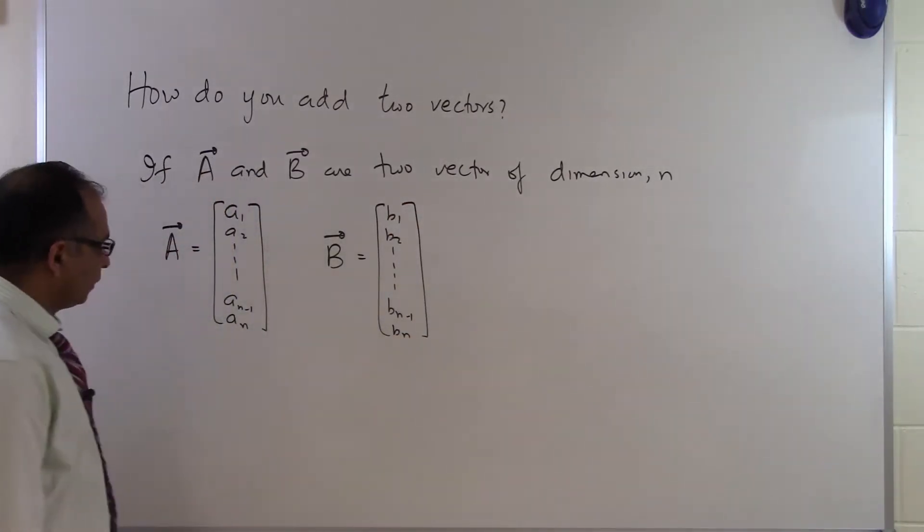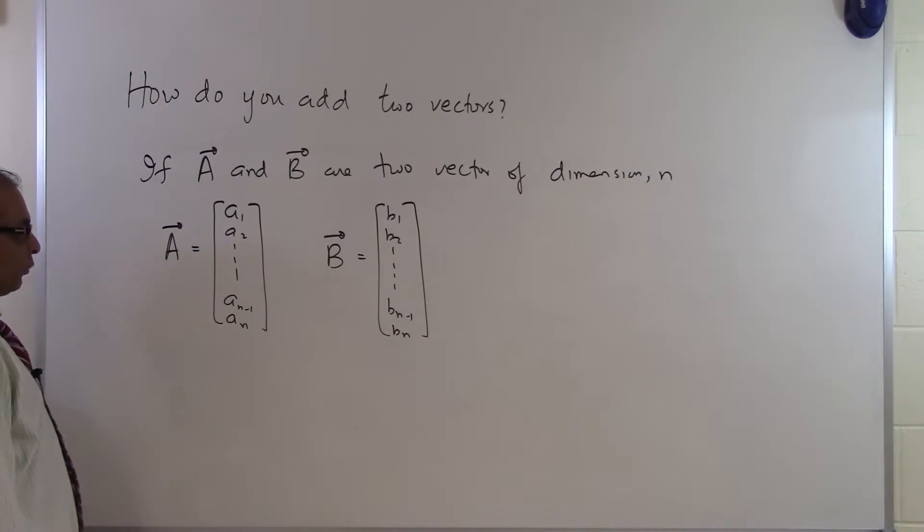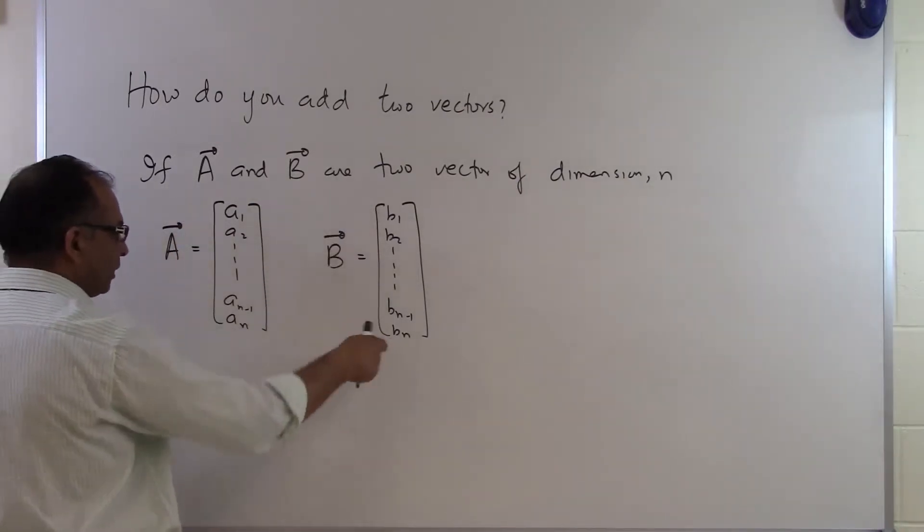So you are finding out that both are n dimensional vectors. It has n components, A has n components, B has n components.